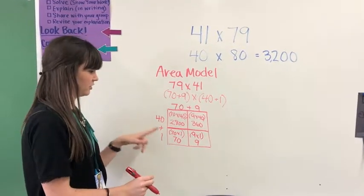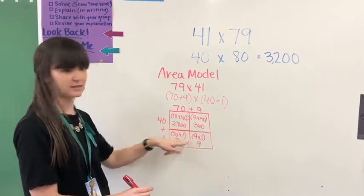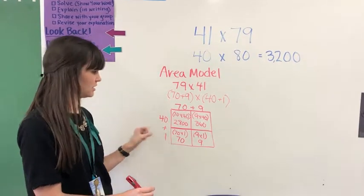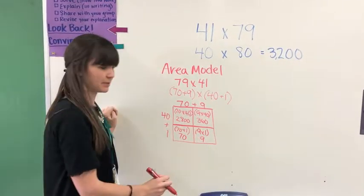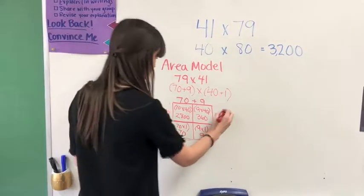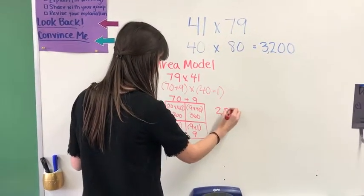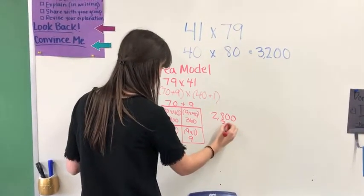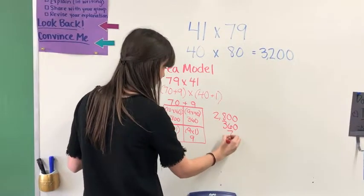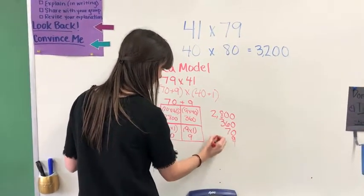I have four partial products, which means I have four parts to my product. So if I add all of these up, I'm going to get my answer. So if I have 2,800 plus 360 plus 70 plus 9, I'll have it.